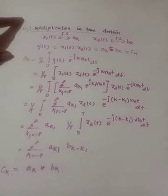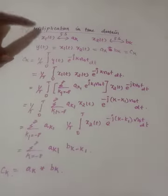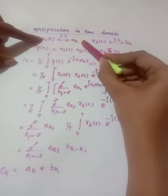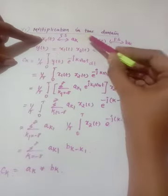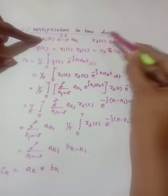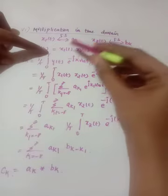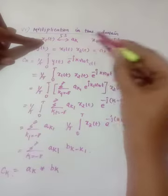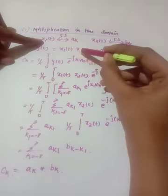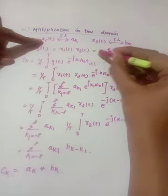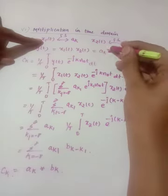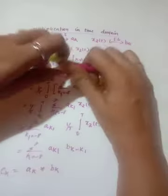The next property is multiplication in time domain. Here we consider two signals x1(t) and x2(t) whose Fourier series coefficients are ak and bk respectively. Multiplying the two signals x1(t) into x2(t) is equivalent to convolution in the frequency domain, represented as ak convolution bk.